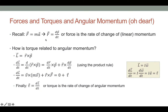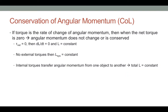We have now shown that the rate of change of angular momentum is the torque. This leads to the notion that if torque is the rate of change of angular momentum and there is no net torque, then the angular momentum does not change — it is conserved. So if the net torque is zero, angular momentum will be a constant, just like conservation of translational momentum when no net forces act on a system.